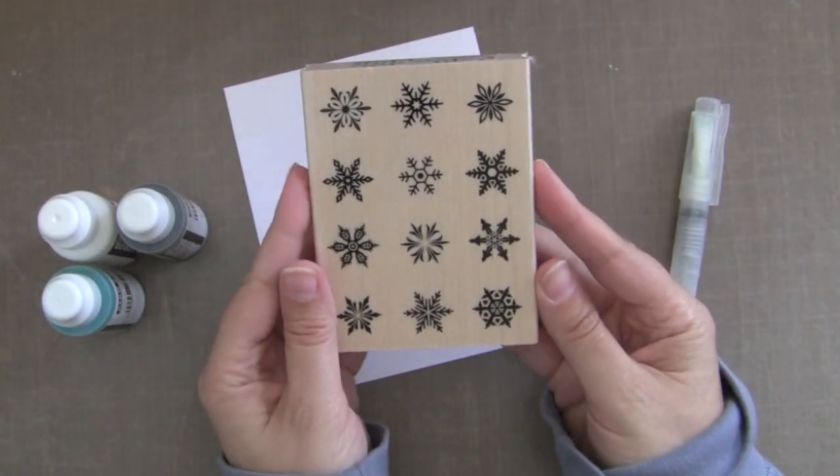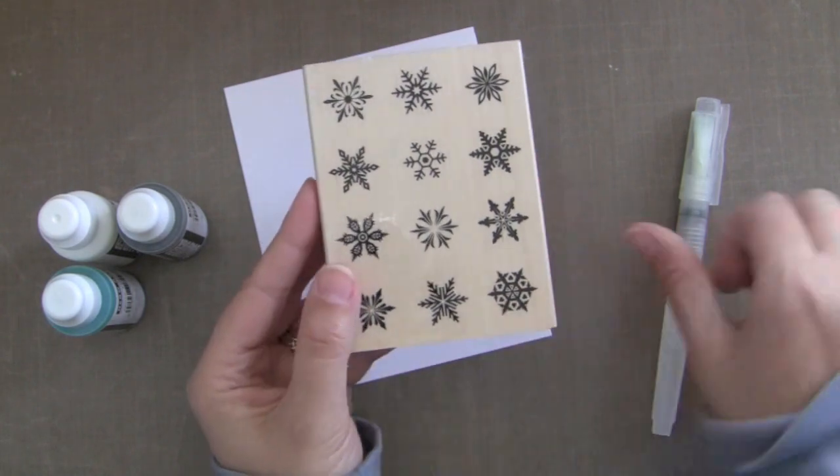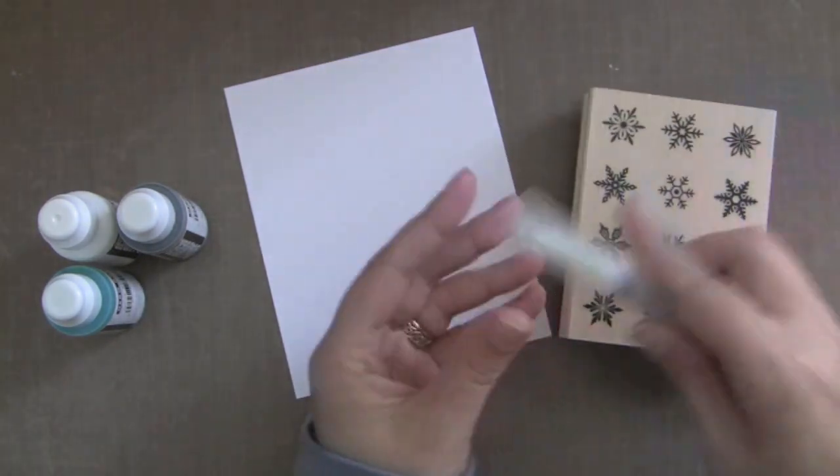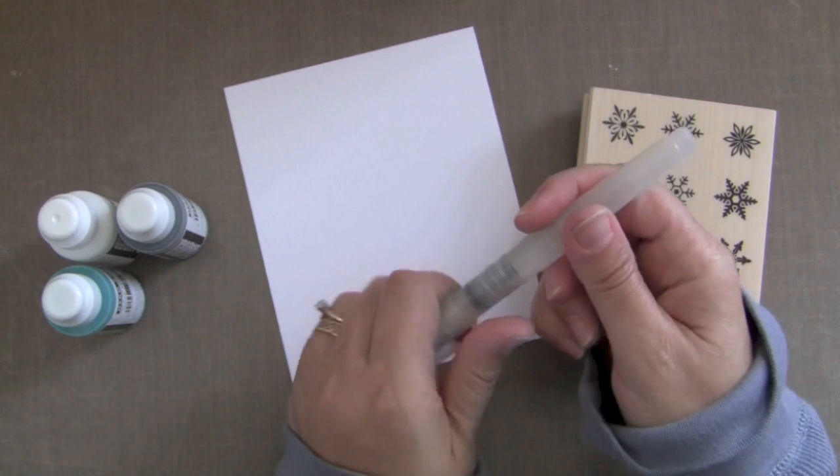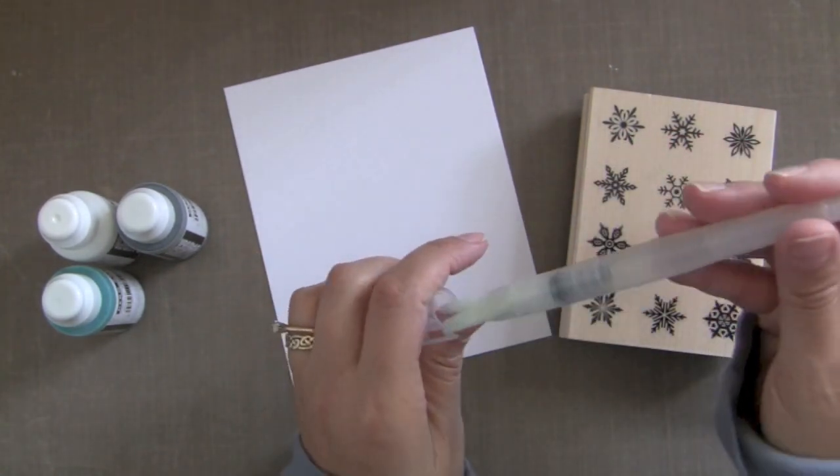This is the stamp that we're going to be using. It's called Snowflake Sampler and I really like this because each snowflake is unique. We're also going to be using a broad tipped water brush. This is the Tim Holtz water brush.